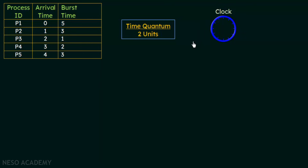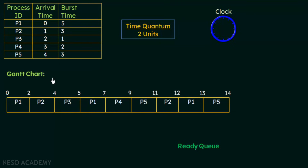You don't have to draw the clock when you are solving the problem yourself, but I am using it to help you understand. I have also formed the Gantt chart and a ready queue. In the ready queue we will place processes that are waiting. The right-hand side represents the head of the queue and the left-hand side is the tail. Processes are added from the tail and served from the head.